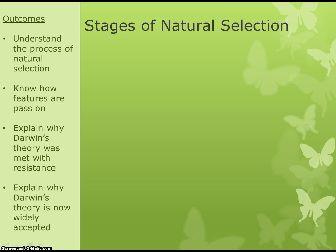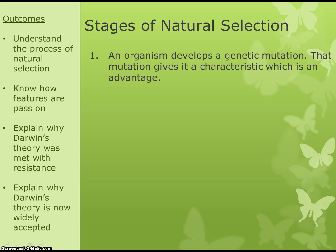The first stage of natural selection is that an organism develops a mutation and that mutation gives it a characteristic which is an advantage. For instance, it might be a giraffe with a longer neck — a genetic mutation that has led to it having a longer neck, which is an advantage because they can reach leaves higher up on the tree.